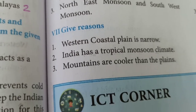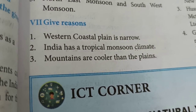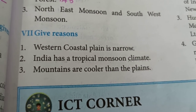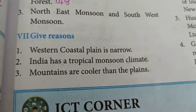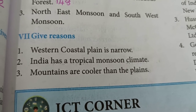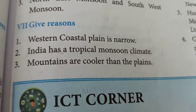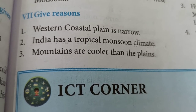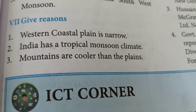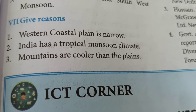Give reasons. First: Western coastal plain is narrow. This question is from the first lesson. The western coastal plains are narrow because they are just next to the Western Ghats, and there are no west-flowing rivers which can form deltas, so we have very narrow western coastal plains.